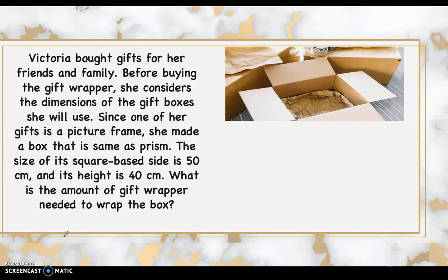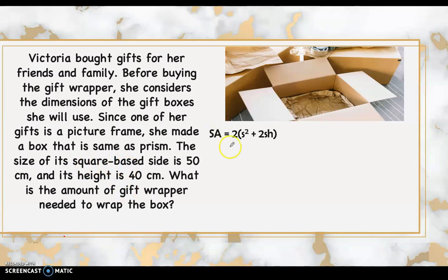Let's apply surface area of prisms to a word problem. Victoria bought gifts and needs to wrap a box shaped like a square prism. The square base has a side of 50 centimeters and the height is 40 centimeters. The keyword is 'amount of gift wrapper needed to wrap the box,' meaning we find the surface area. Since it's a square prism, we use the formula: 2(s² + 2sh).